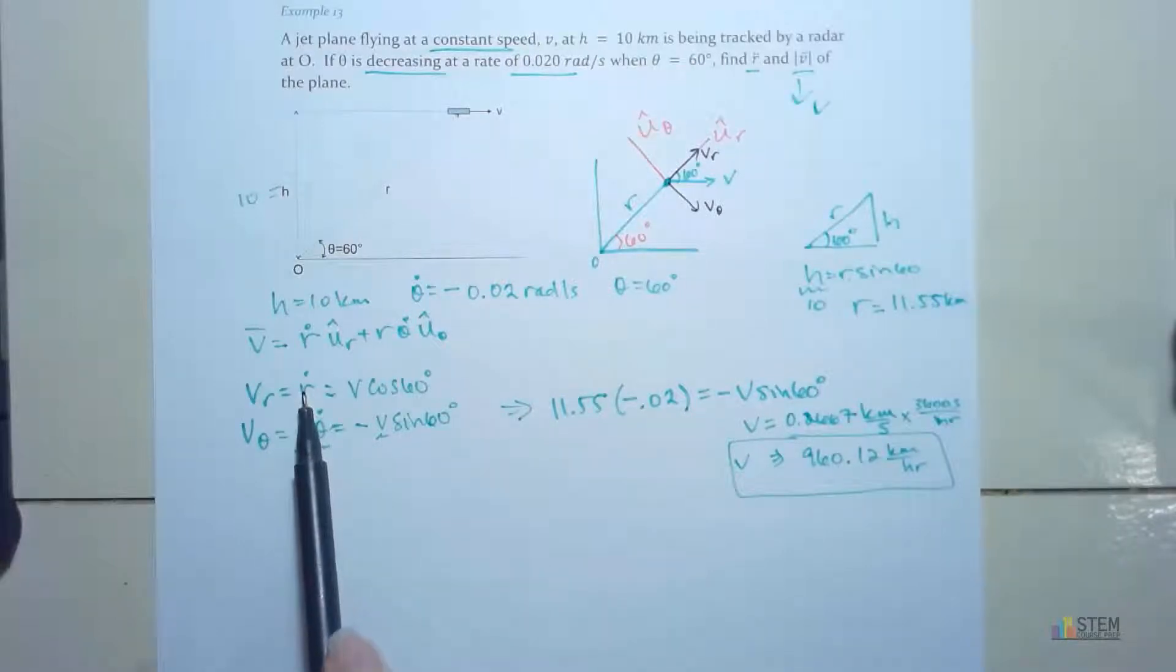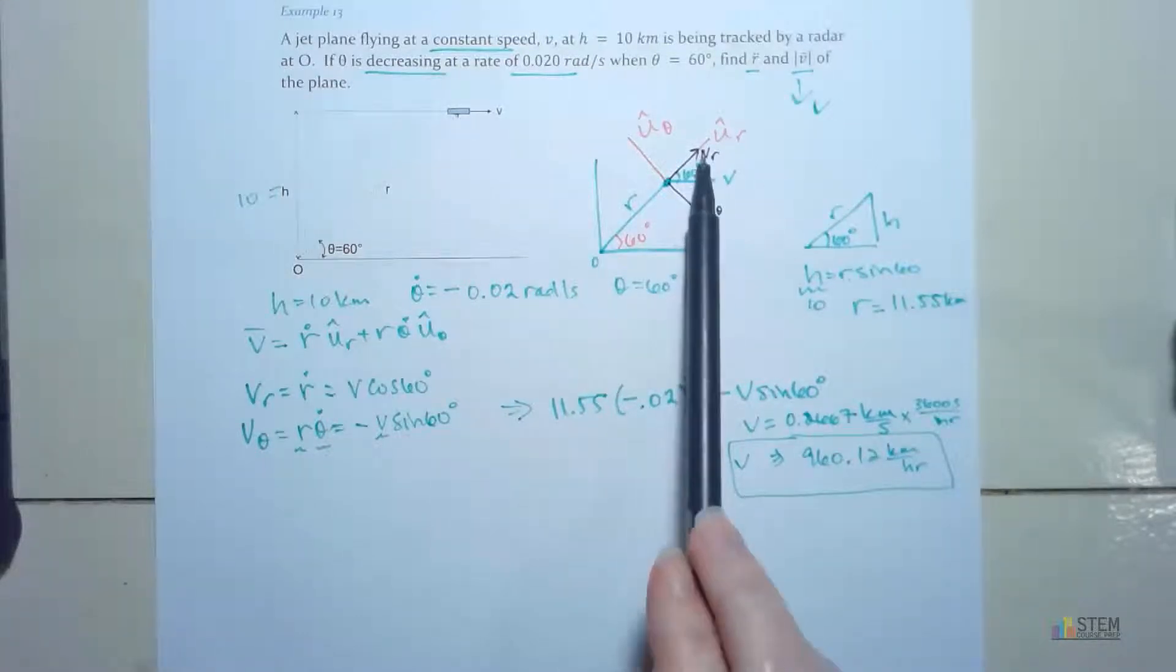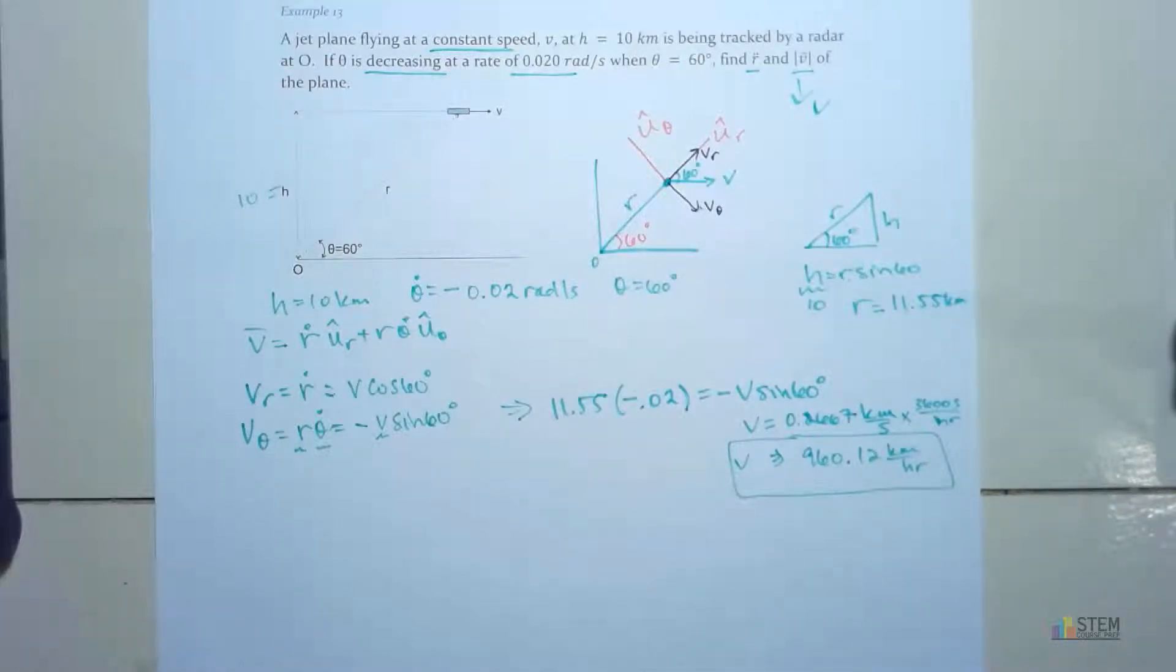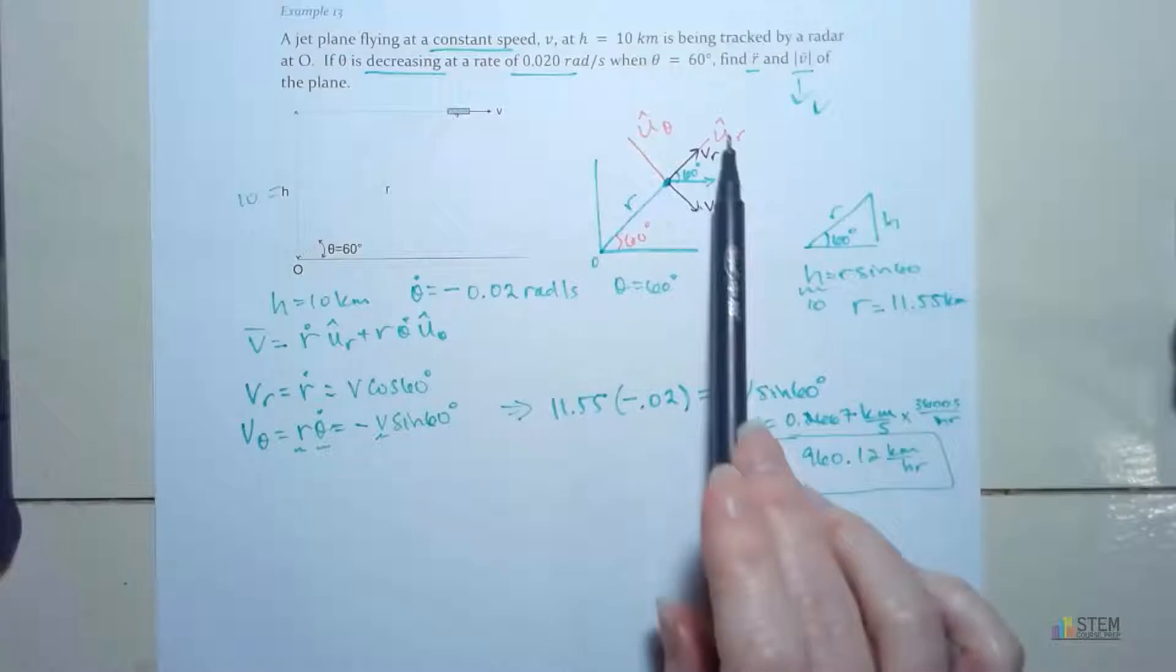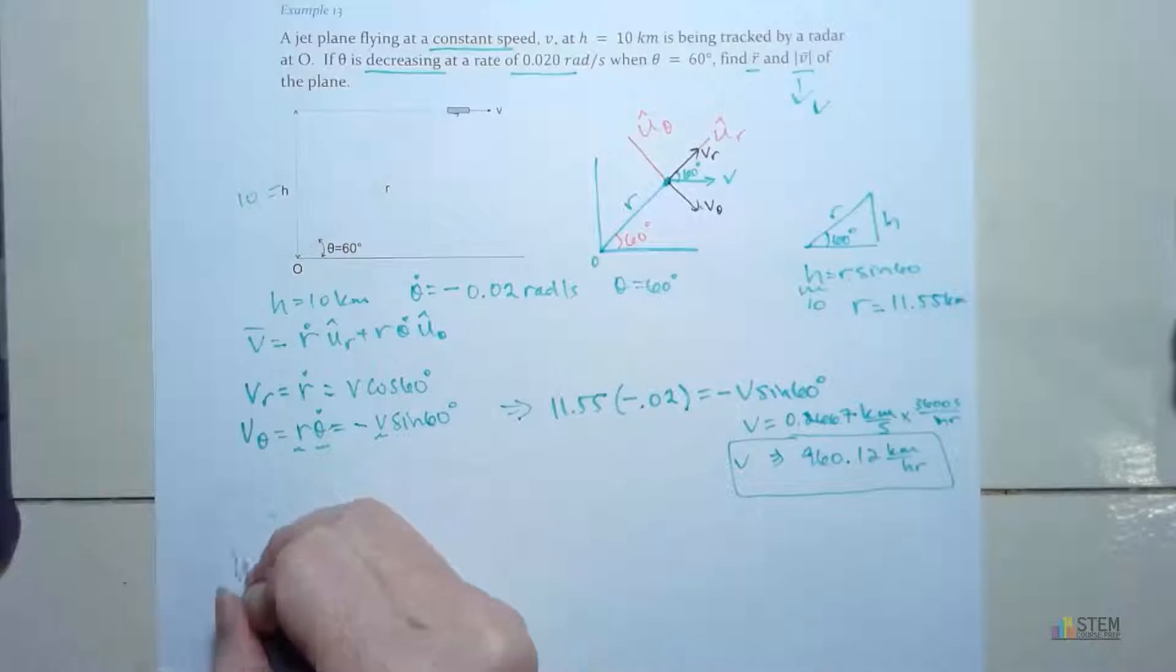So this was the way to go. So anytime you think you get stuck, always go back to this, look at the components. These components tell you a lot of information, and a lot of times students forget about those. They just totally forget that they can split these things up like we did right here. Now let's go and find the next thing, which is R double dot. Now that's going to come into play with the acceleration equation.